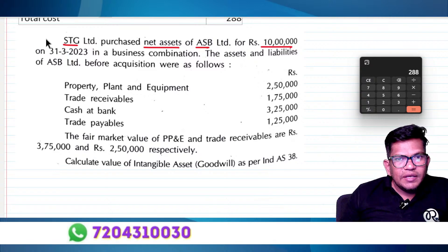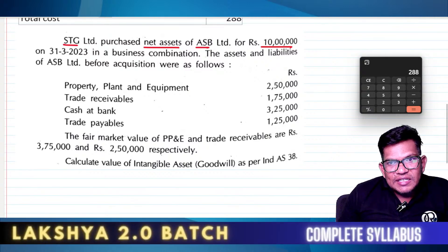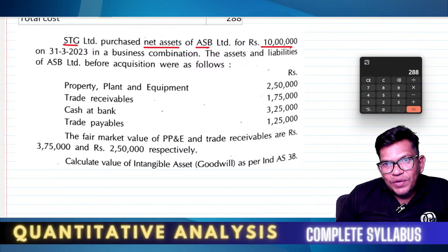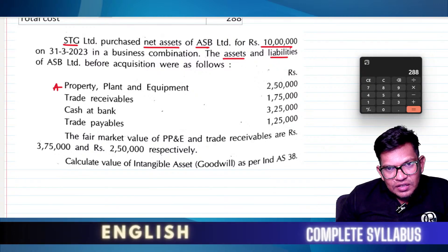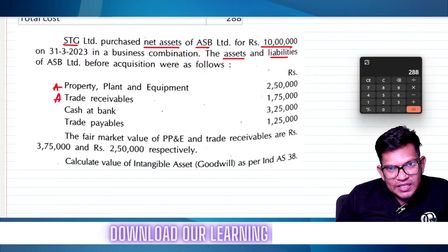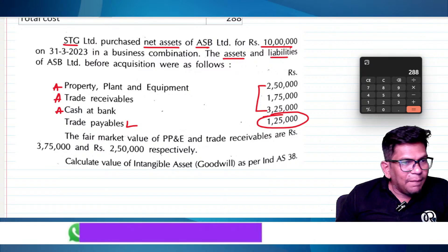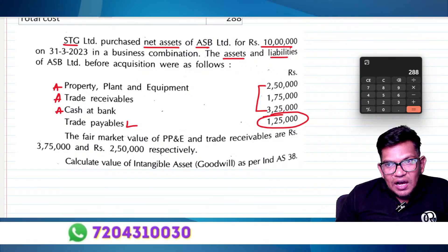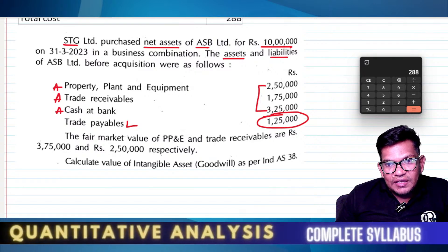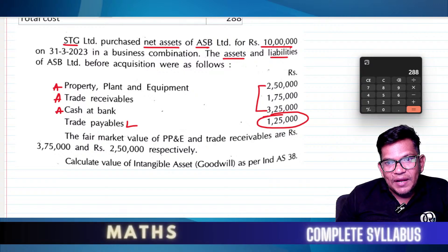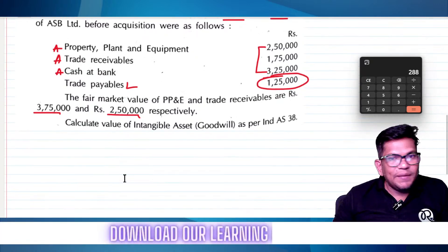On a 5-point question on property, plant and equipment — it cannot be taken at book value. The equation before was: assets = liabilities. Property, plant and equipment; trade receivables; cash assets; and liabilities on the other side. We show how much they have paid. The fair market value of PP&E and trade receivables — property, plant and equipment is 3 lakh 75 thousand, and trade receivables are 2 lakh 3 thousand. Now we calculate goodwill.